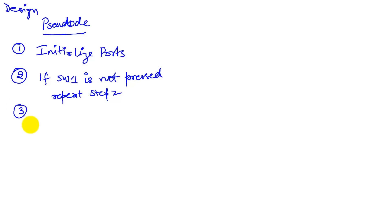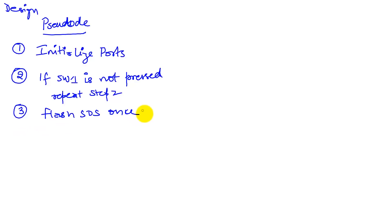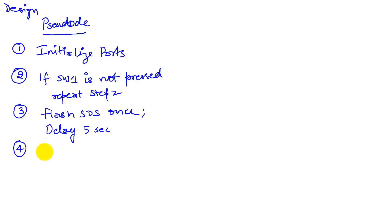When I go to the next step, I flash the SOS once. After having flashed SOS once, I will perform another step: I'm also going to delay for a short while so that two successive flashes don't look like they're back to back. So I delay for five seconds maybe. And then I'm going to check whether the second switch is on — that is, if switch two.